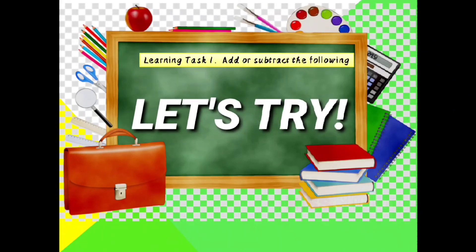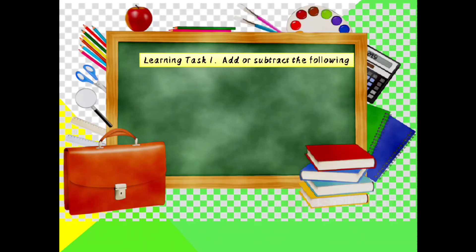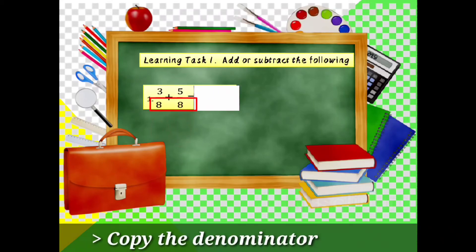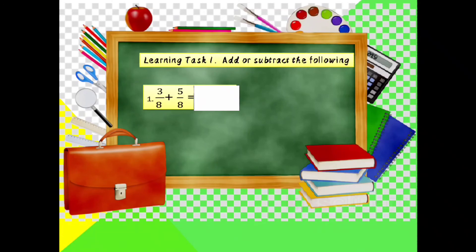Let us try learning task number 1 — add or subtract the following. Example number 1: 3 over 8 plus 5 over 8. Copy the denominator 8 and add the numerators. So, 3 over 8 plus 5 over 8 is equal to 3 plus 5 over 8, which is 8 over 8. Then divide: 8 over 8 is equal to 1. That is the final answer.